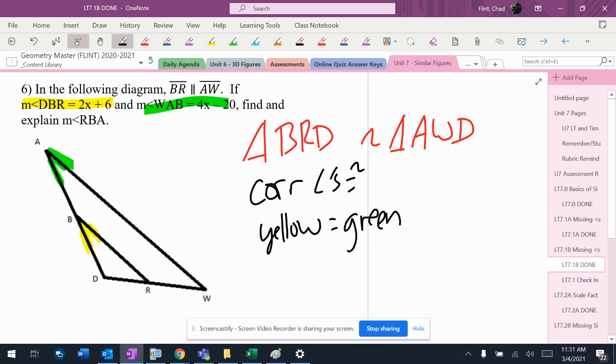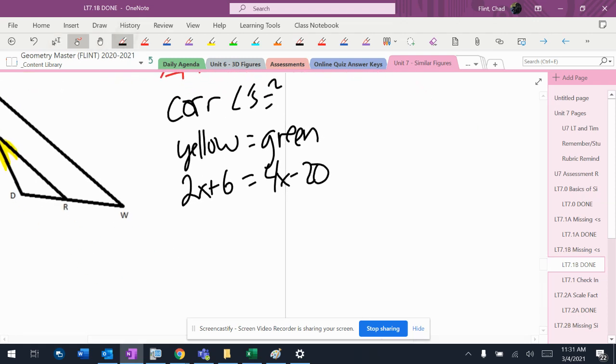So I've got that yellow equals green, so that means 2x plus 6 equals 4x minus 20.